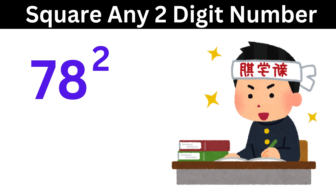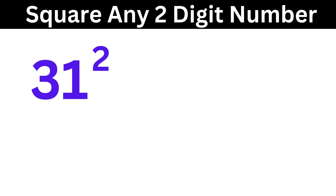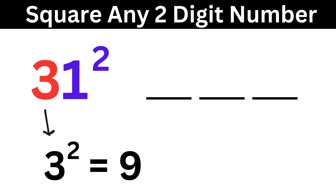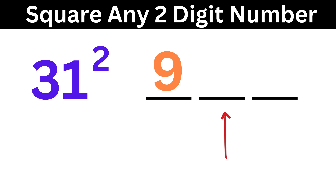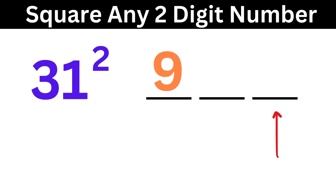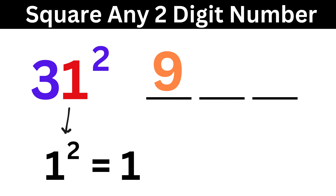Let us start with an example, like 31 squared. Divide it into 3 parts. Now square the first digit of 31, which will be 3 squared or 9, so write it here. Take the last digit, which is 1, and square it. We get 1, so put it here.